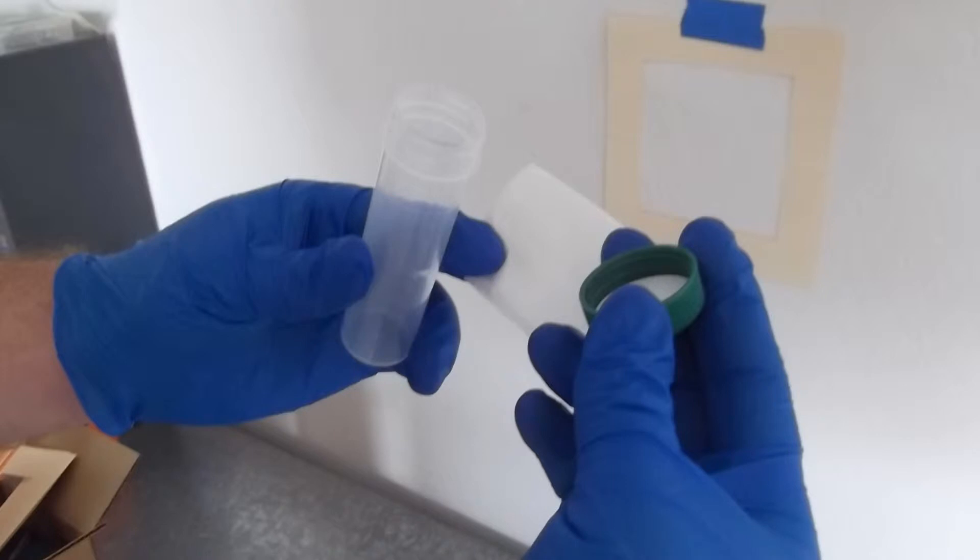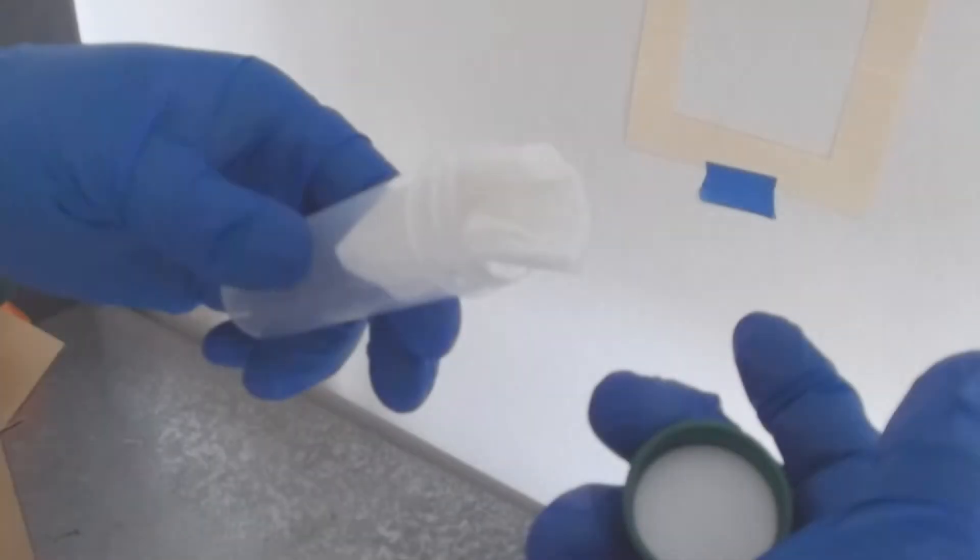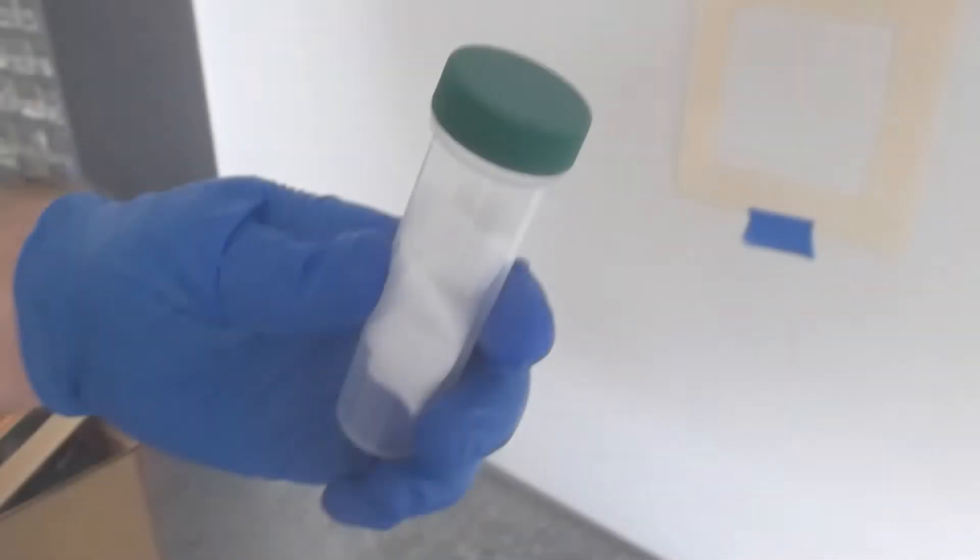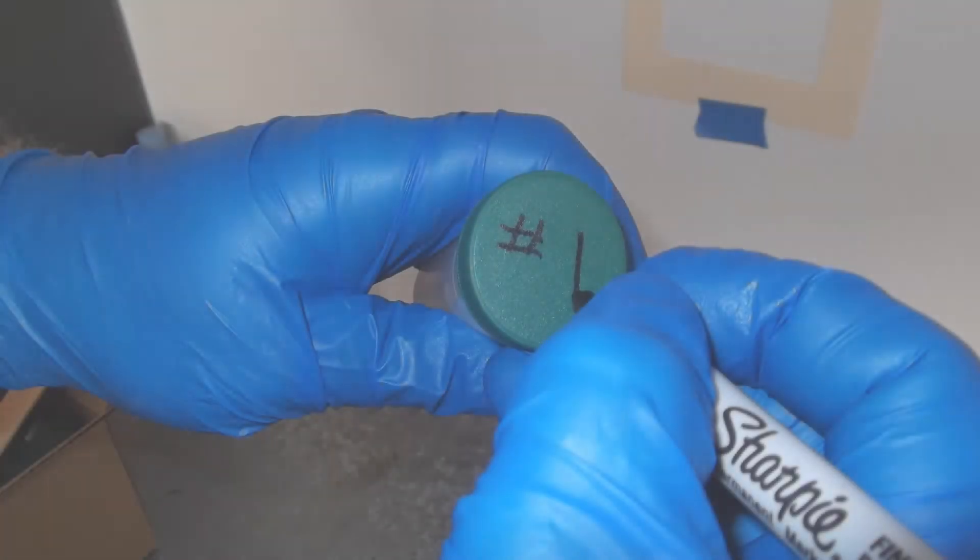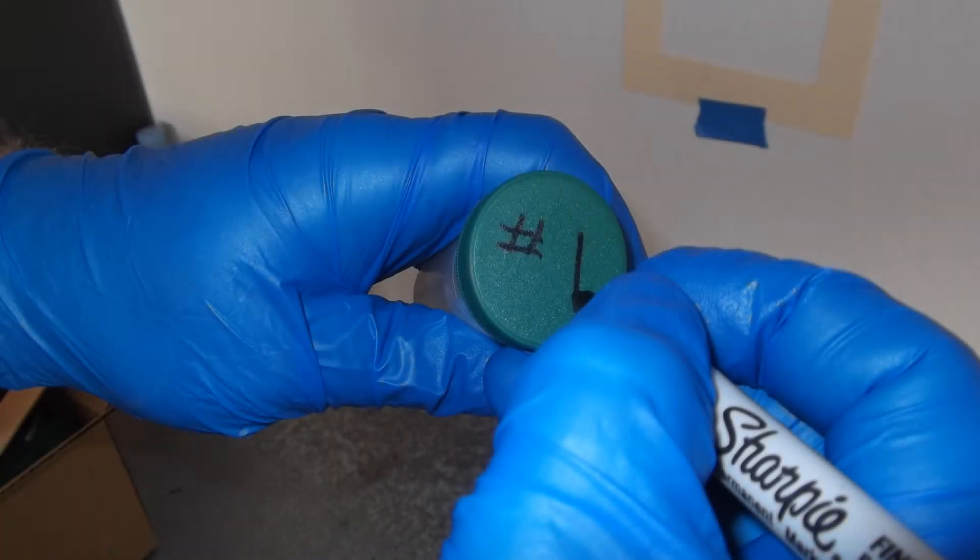Fold the wipe again and insert it into a clean 50-milliliter vial. Be sure to cap the vial securely and label it with a unique sample identification number or name.